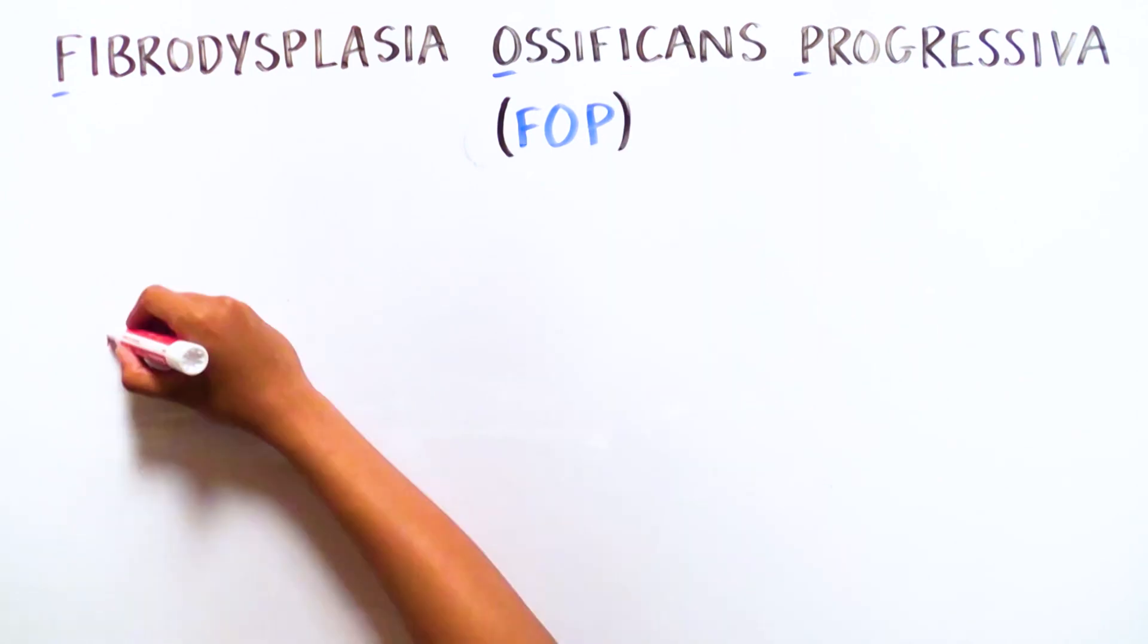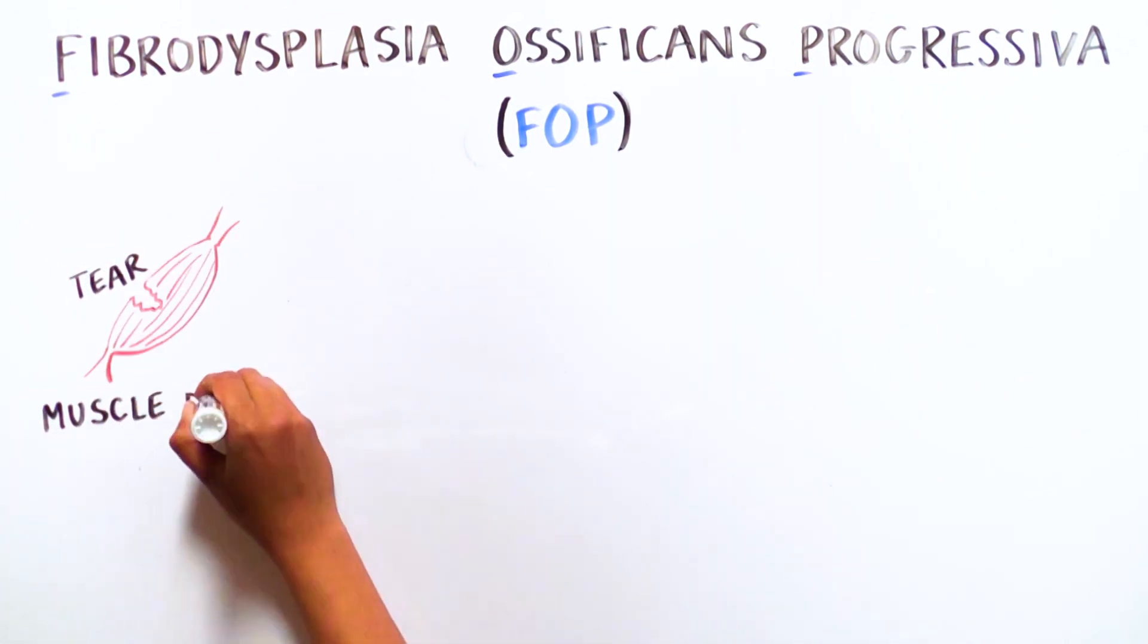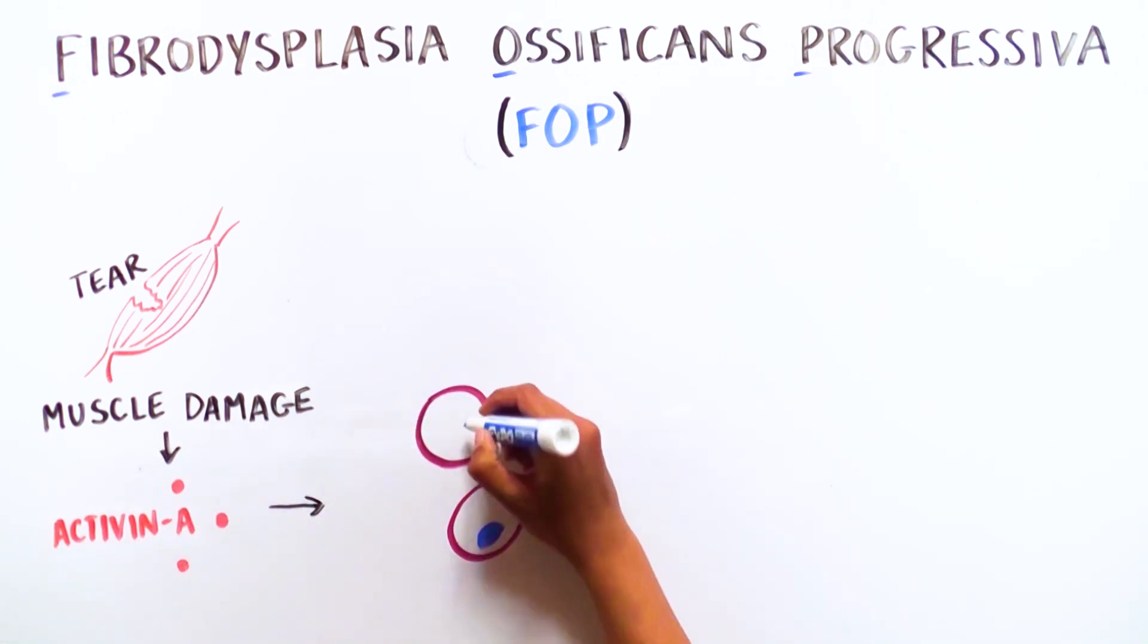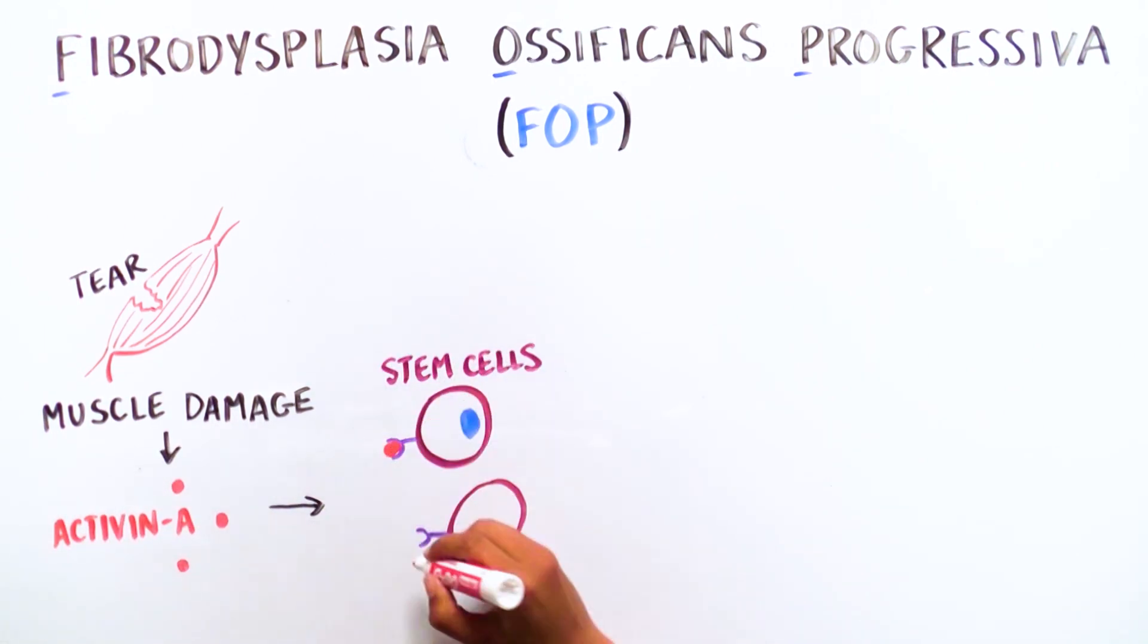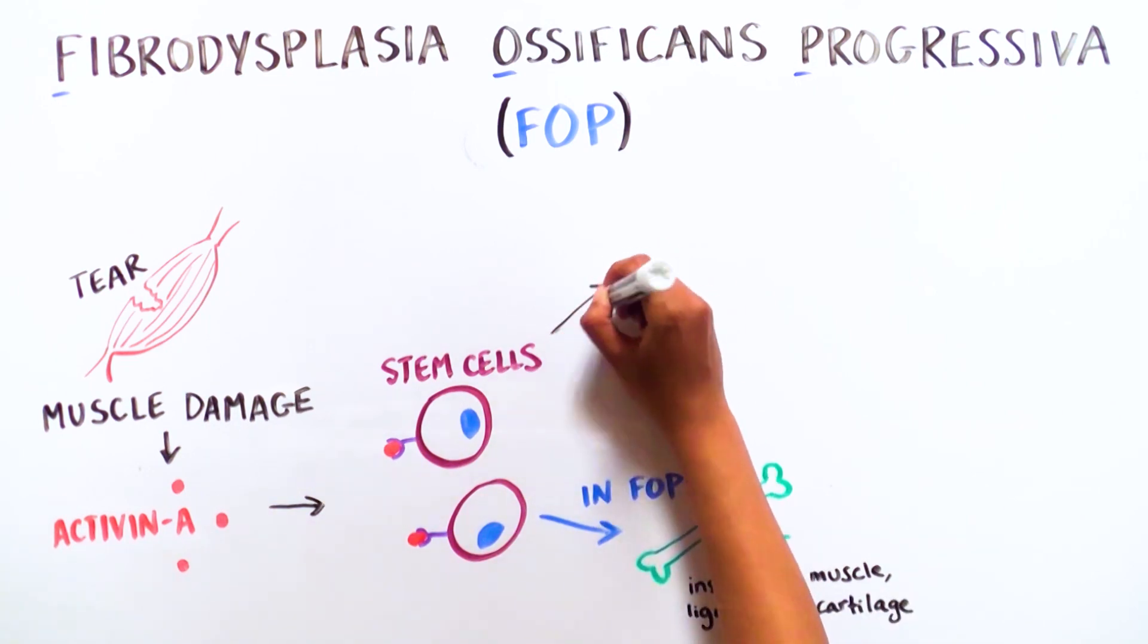Stem and stem-like repair cells in those with FOP misinterpret a protein called Activin A as a signal to become bone instead of repair muscle with muscle. The same thing happens with ligaments and cartilage. Instead of becoming ligaments or cartilage, they also become bone.